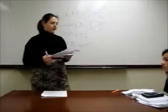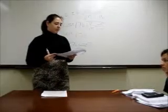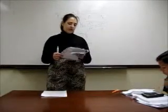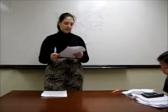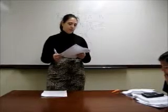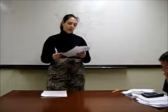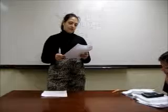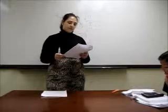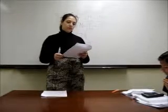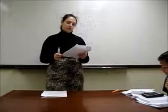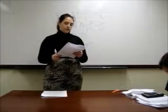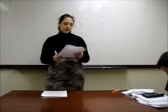Question five: suppose we wish to determine if there tends to be a difference in number of tomatoes eaten by deer. To answer this question, we need to test the hypothesis where the null is mu2 minus mu1 equals zero, or the alternative, they're not equal to zero.